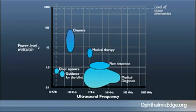But the ultrasound used in cleaners is quite high in its power level, watts per square centimeter. In diagnostic B-scan, we are using very low power levels, even lower than door openers or guidance for the blind. So you need not worry about causing tissue destruction when you're doing contact ultrasonography.